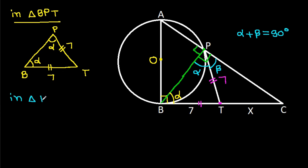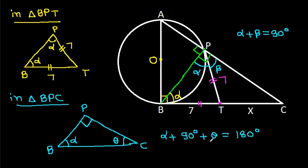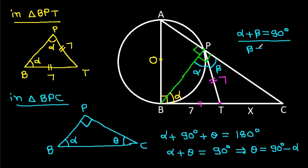Now in triangle BPC, this angle is alpha, this angle is 90 degrees, and suppose this angle is theta. Then alpha plus 90 degrees plus theta equals 180 degrees, so alpha plus theta equals 90 degrees, and theta equals 90 degrees minus alpha. From here we get beta equals 90 degrees minus alpha, which means theta equals beta.